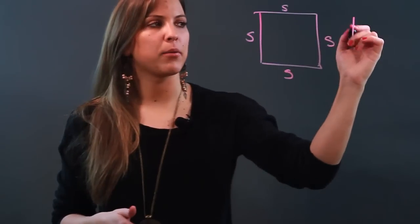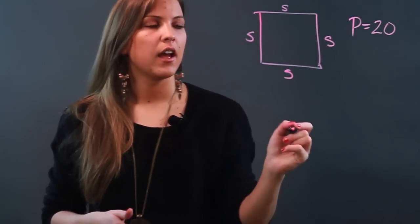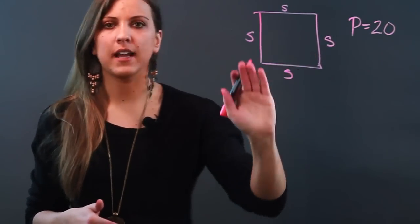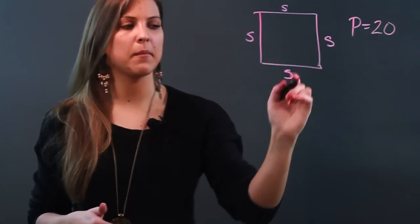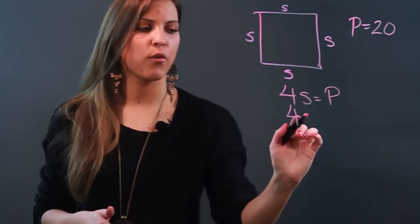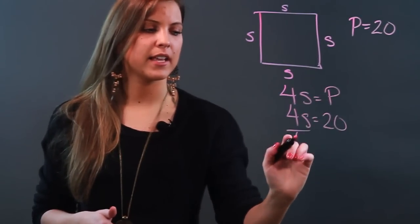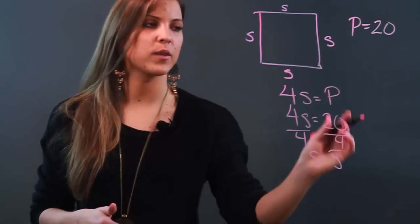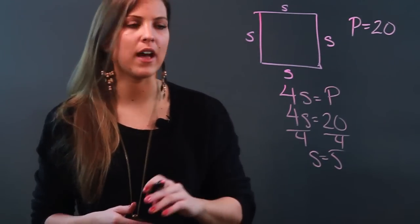So if my perimeter is 20, I know that I have to add all the sides to get the perimeter, but because they're all the same I can write that as 4S equals the perimeter. So if 4S equals 20, then I divide both sides by 4 and I get S equals 5. So I know that my length is 5 and my width is 5.